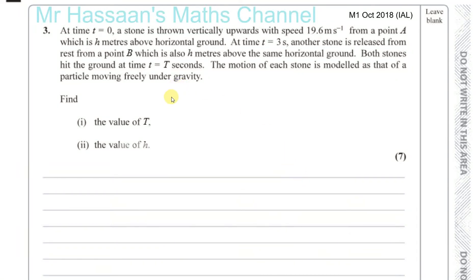Question number 3 from October 2018, M1. At time t equals 0, a stone is thrown vertically upwards at a speed of 19.6 metres per second from a point A, which is h metres above horizontal ground. At time t equals 3 seconds, another stone is released from rest at point B, which is also h metres above the same horizontal ground. Both stones hit the ground at time t equals T seconds. The motion of each stone is modelled as that of a particle moving freely under gravity. Find the value of T and the value of h.